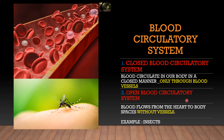In an open blood circulatory system, found in small organisms such as insects, blood flows from the heart to the body spaces without vessels. There are no blood vessels in insects — blood flows directly from the heart to body spaces. In contrast, in a closed system blood circulates only through blood vessels, which is why it is called a closed blood circulatory system.